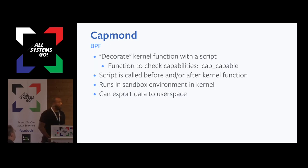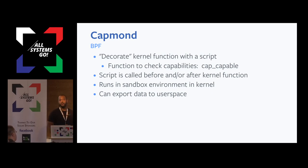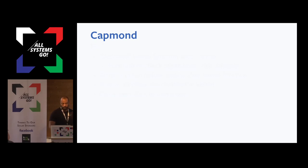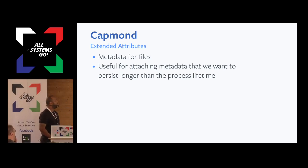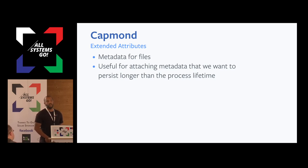BPF is basically a way to decorate a kernel function with a script that you can tell the kernel to run before or after. It actually runs in kernel space and in a sandbox environment, which is really great for security, and it also has ways to export data from kernel space to user space. Extended attributes are basically just a way to attach metadata to a file. This is useful for us because it persists a little bit longer than the lifetime of the process — for example, if you're monitoring capabilities for a process that comes alive, uses a capability, and dies really quickly, you don't want something as ephemeral as just looking at the process and doing some resolution.